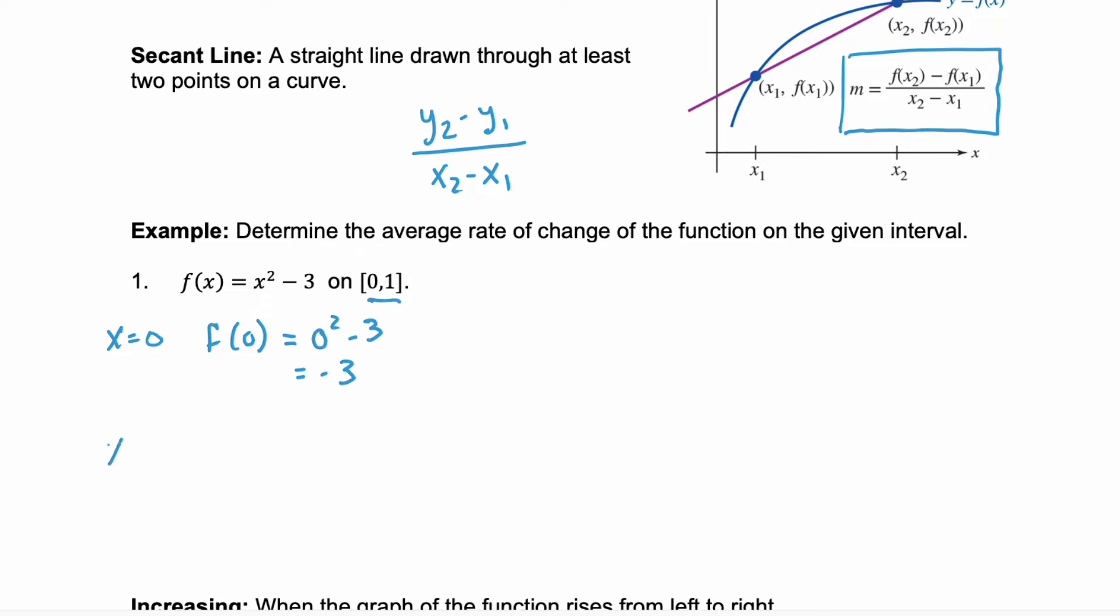And then our second point would be x equals 1. f(1) is 1 squared minus 3, which is 1 minus 3 or negative 2. And then you just substitute everything into that equation for the average rate of change. We have negative 2 minus the negative 3 over 1 minus 0.